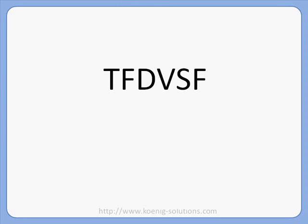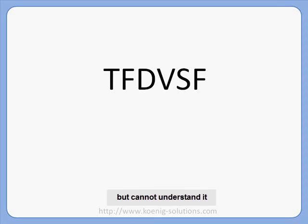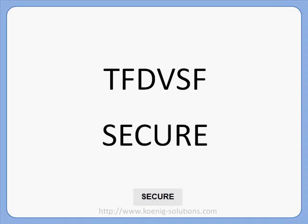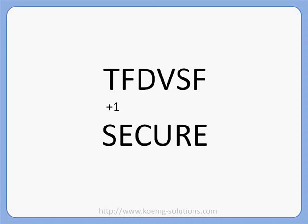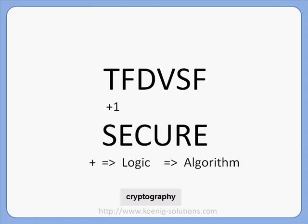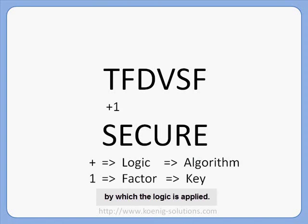What is this? This is encrypted text. You can see some characters but cannot understand it. What I have written is 'secure'. How I did it? I applied a simple logic of plus one — what comes after S is T, after E is F, after C is D, and so on. 'Plus' is a logic which is called an algorithm in cryptography, and 'one' is the factor by which the logic is applied — this is called the key.